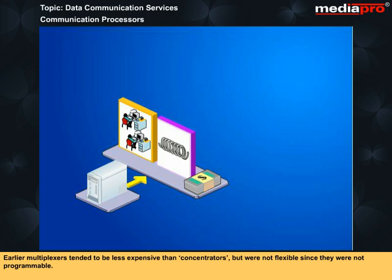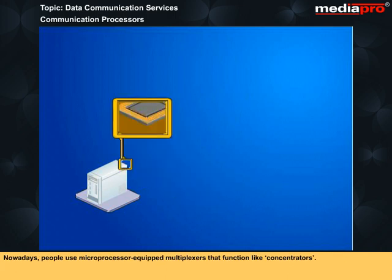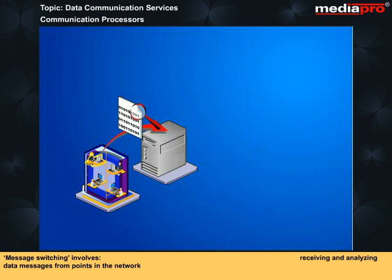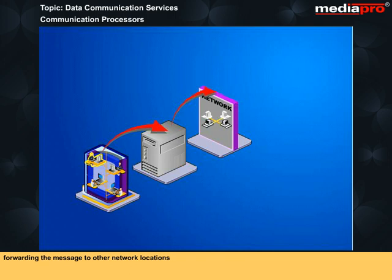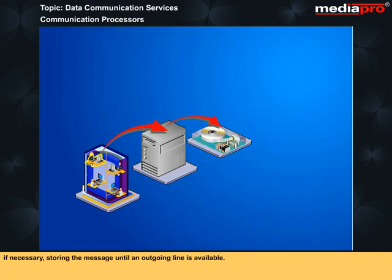Earlier multiplexers tended to be less expensive than concentrators but were not flexible since they were not programmable. Nowadays, people use microprocessor-equipped multiplexers that function like concentrators. Message switching involves receiving and analyzing data messages from points in the network, determining the destination and proper routing, forwarding the message to other network locations, and if necessary storing the message until an outgoing line is available. The processor used for all these functions is called a message switcher.